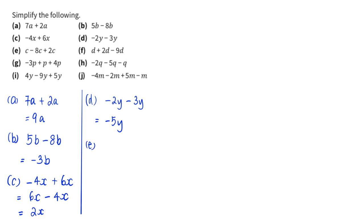Part e: 1c minus 8c plus 2c. I can do it slowly and steadily. 1c minus 8c gives me negative 7c, then negative 7c plus 2c gives me negative 5c for this question.